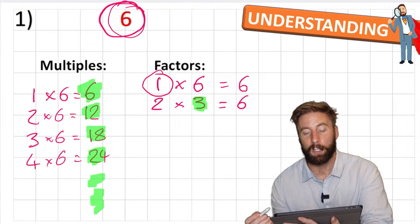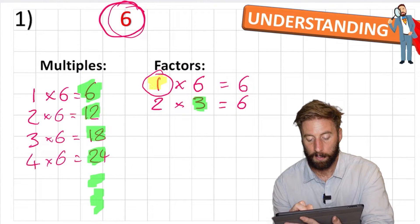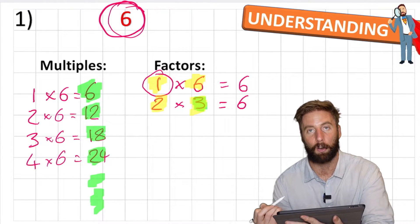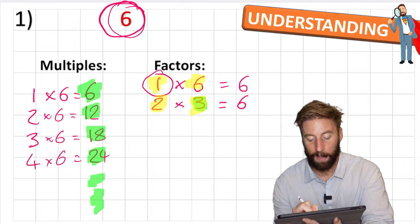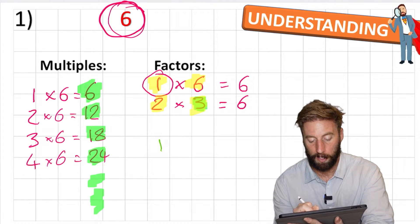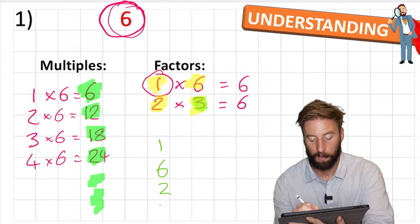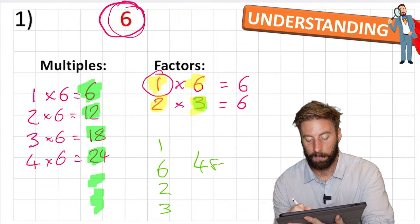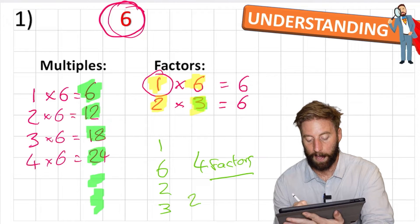So now we can look at these numbers: 1, 6, 2 and 3 and register that they are the factors of 6. So 6 has factors 1, 6, 2 and 3. So it has four factors or two factor pairs.